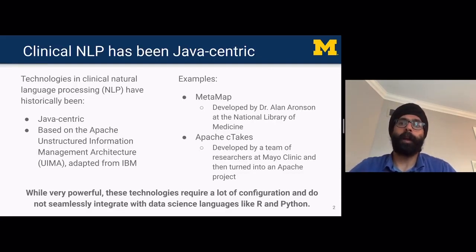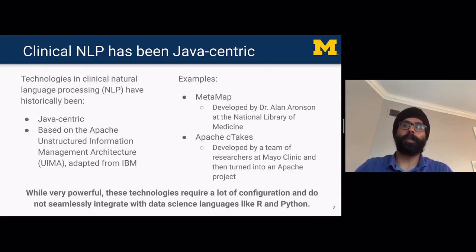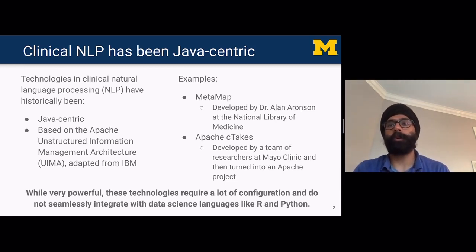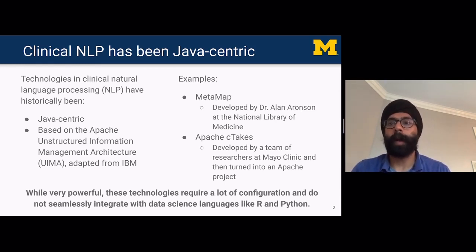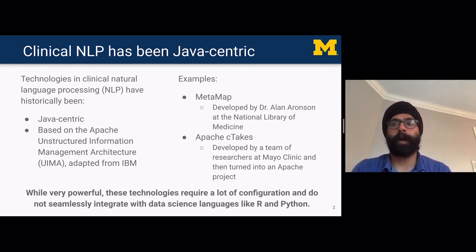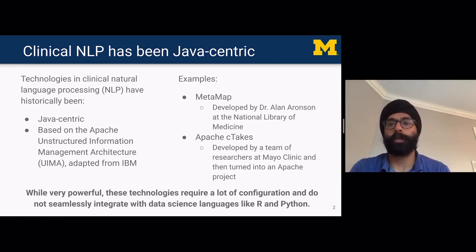Historically, clinical NLP has been fairly Java-centric. Most of the existing technologies have relied on the Apache Unstructured Information Management Architecture, also known as UIMA, that was adopted from IBM. Two prominent examples of UIMA-based software include MetaMap and Apache cTAKES. MetaMap was developed by Dr. Alan Aronson at the National Library of Medicine, and Apache cTAKES was developed by a team of researchers at the Mayo Clinic and then eventually turned into an Apache project.